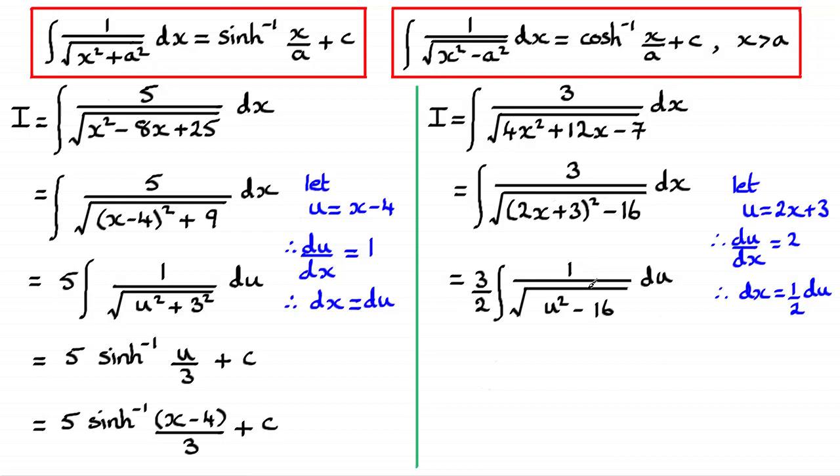And then we're left with 1 over, and in place of 2x plus 3, we've got the u. And I've got it squared. And then we've got the minus 16. And this integral now takes on this particular type, the inverse cosh of x over a. Only x this time is the u. So if we substitute for that, when we do the integral, we're going to get 3 over 2 inverse cosh of u over 4 plus the constant of integration c.